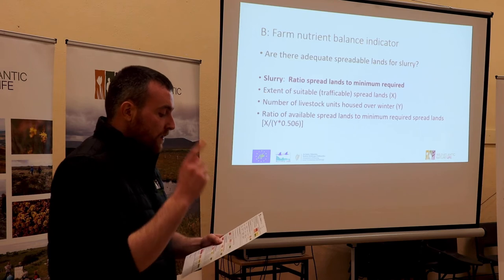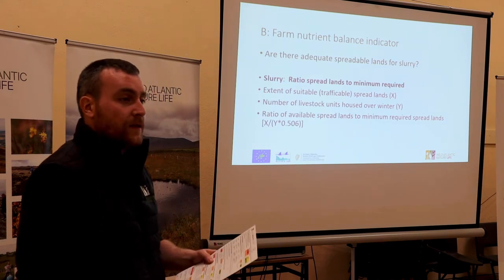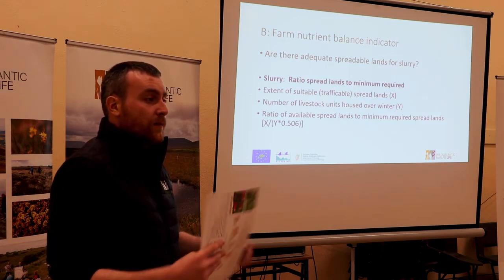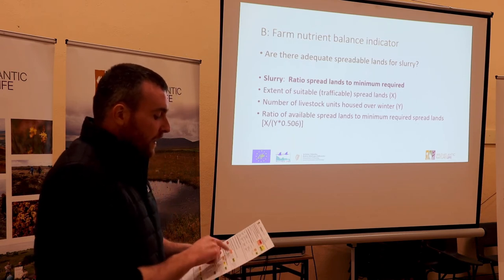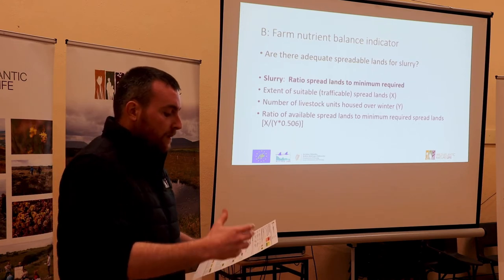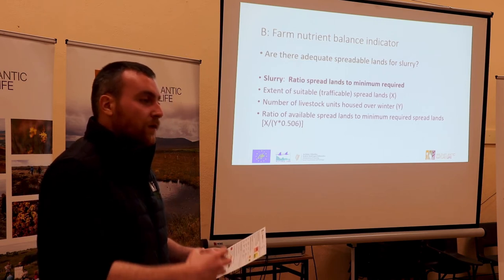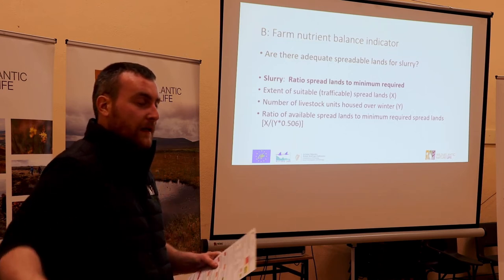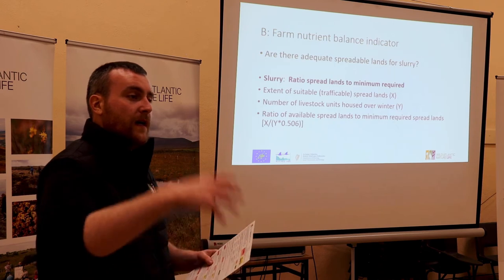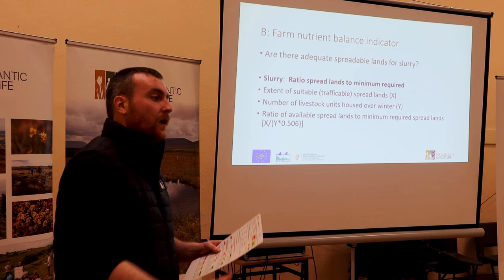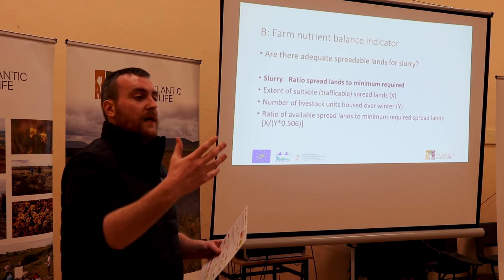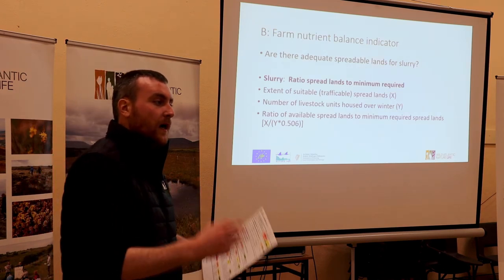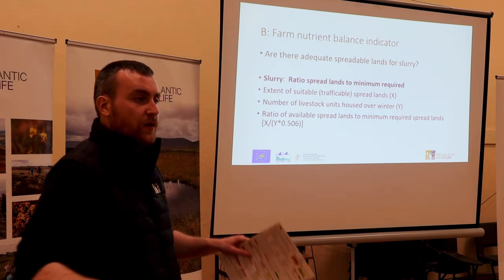The two parts of the calculation are: the extent of suitable spread land in hectares, and the number of livestock units housed over winter. There are three categories: poor, inadequate, and adequate. For example, 10 cattle over winter spreading on six hectares is adequate - sufficient to absorb the nutrients. Spreading on only four hectares with 10 cattle would be inadequate. Spreading on just two hectares with 10 cattle is poor - a lot of nutrients won't go into the soil and will run off into streams and rivers.